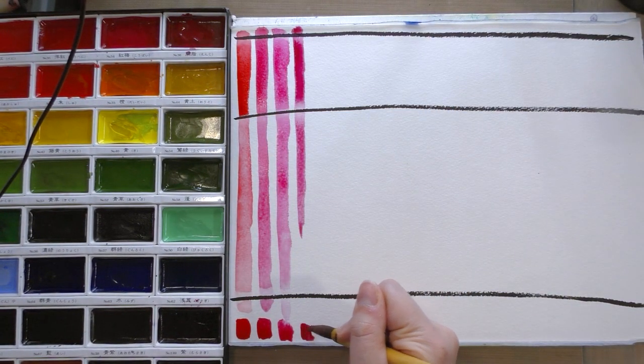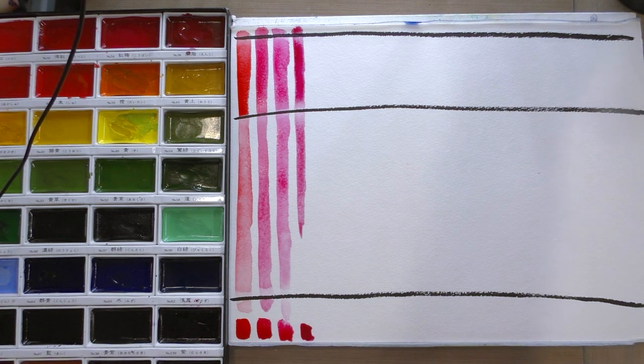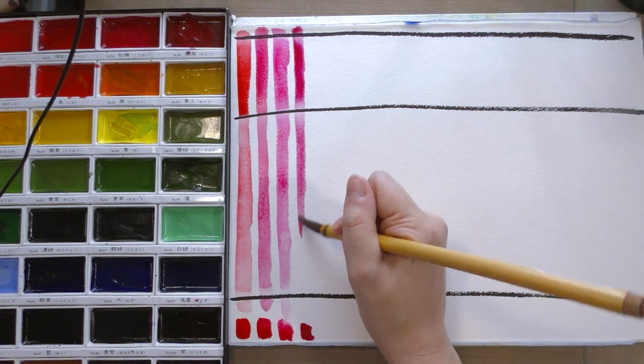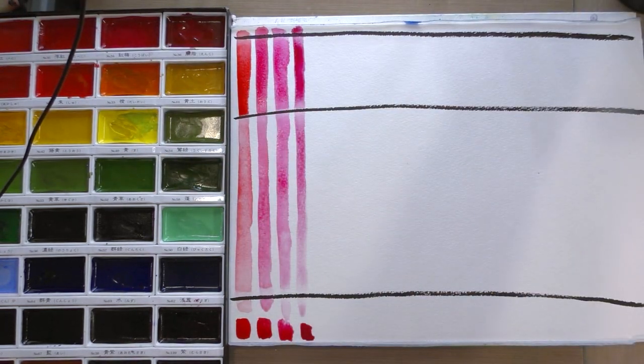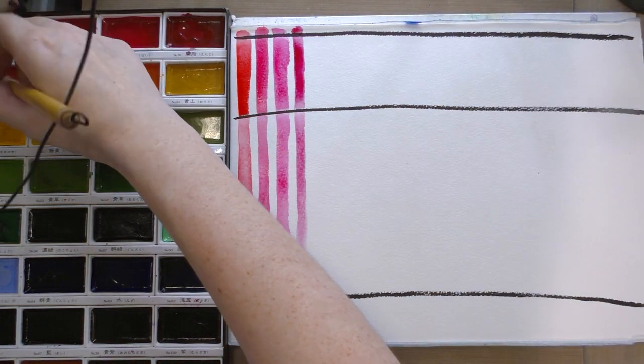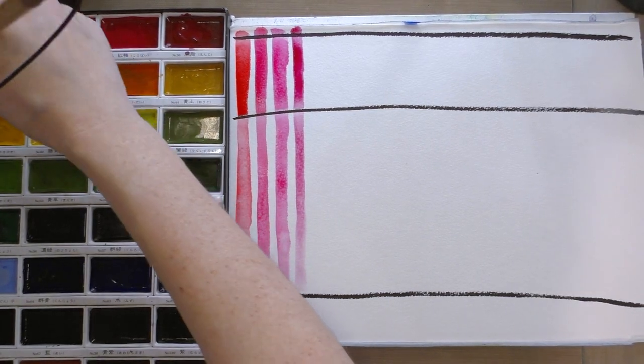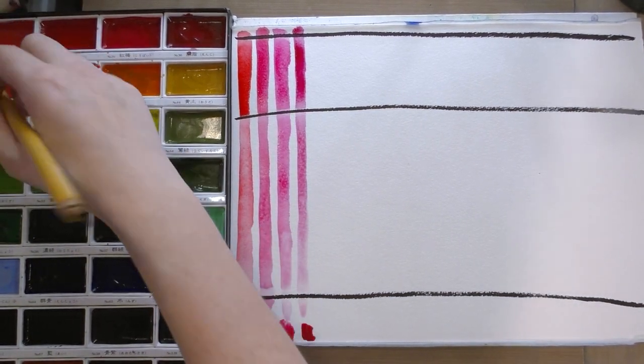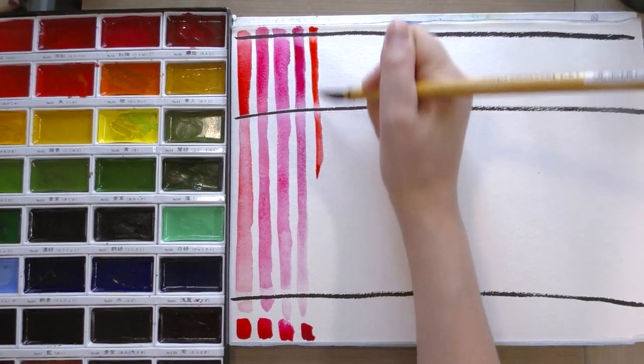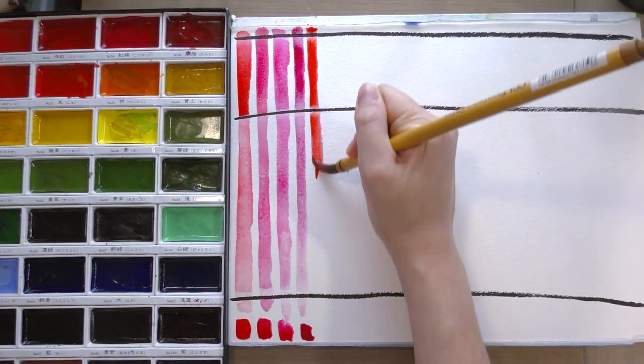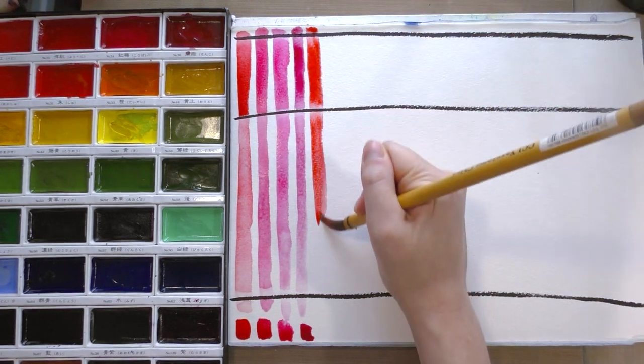And we are swatching today on fluid easy block watercolor paper. This is a cellulose-based watercolor paper. Because these are Gansai Tambi watercolors, they're technically designed to be best at doing edegame. And that is typically done on a washi type of paper, which handles watercolor quite differently from the papers we're used to in the West.